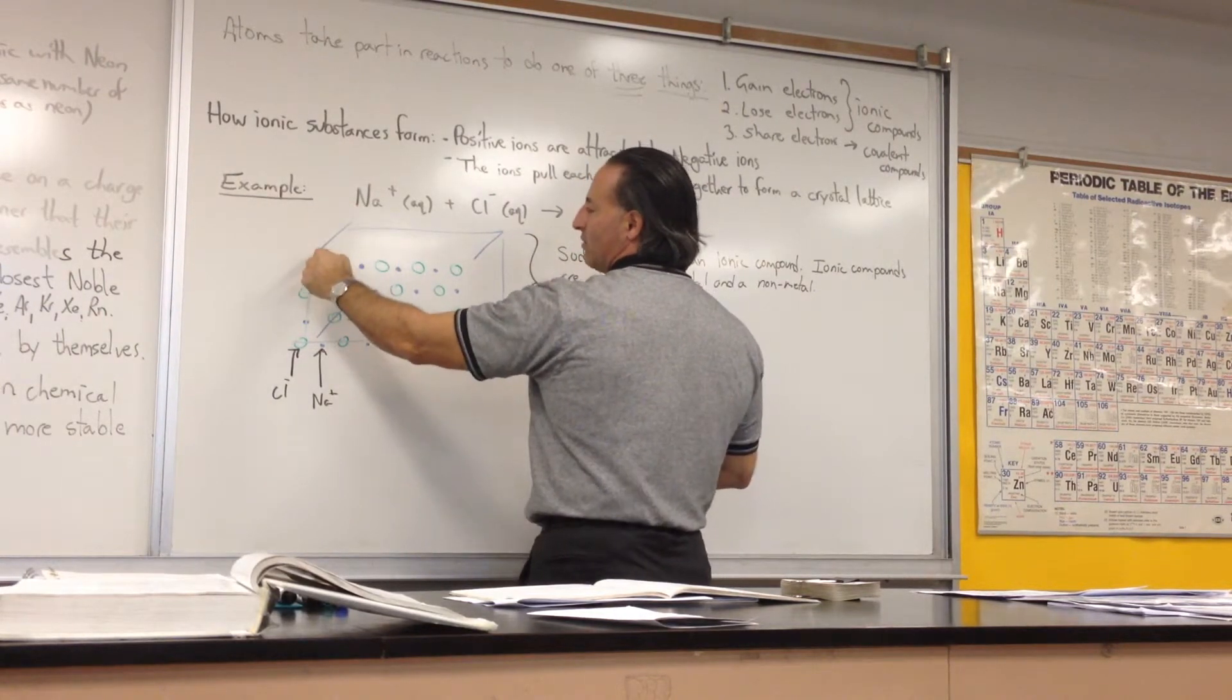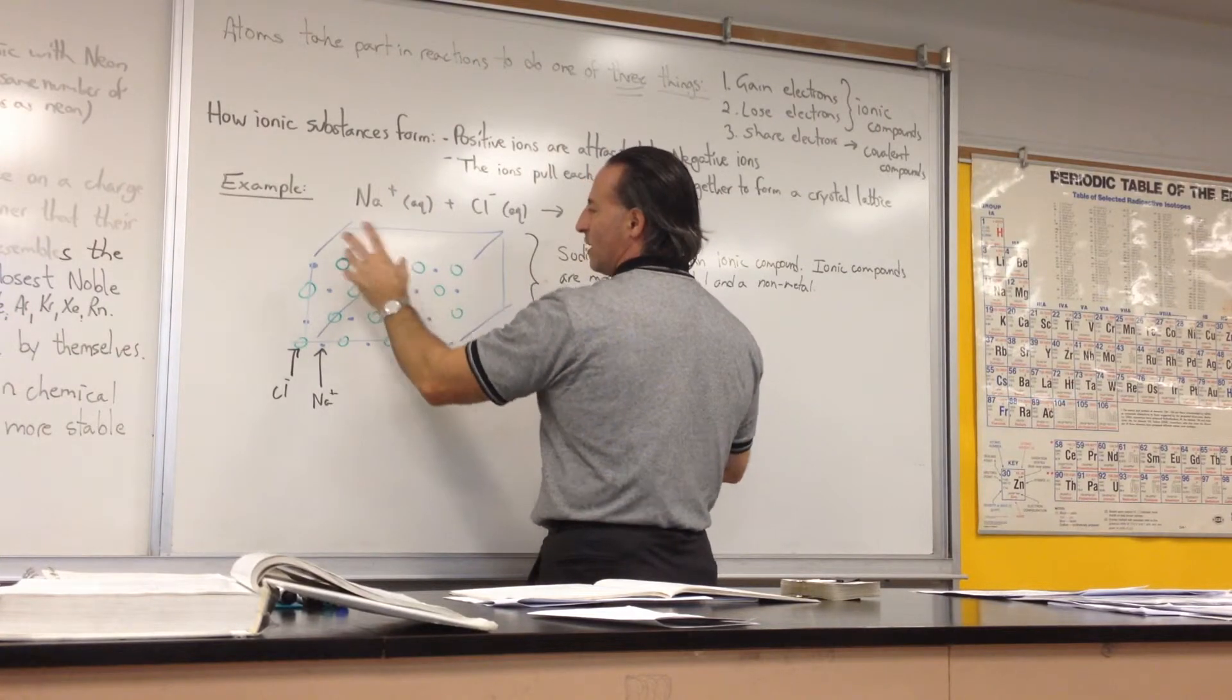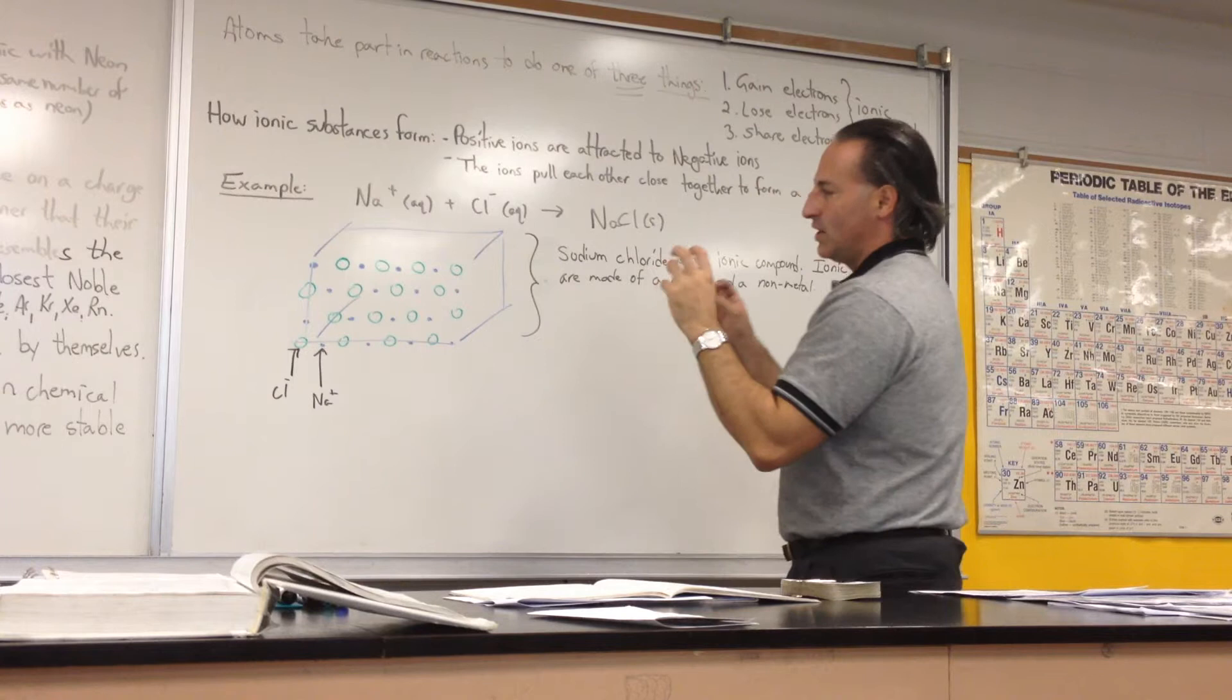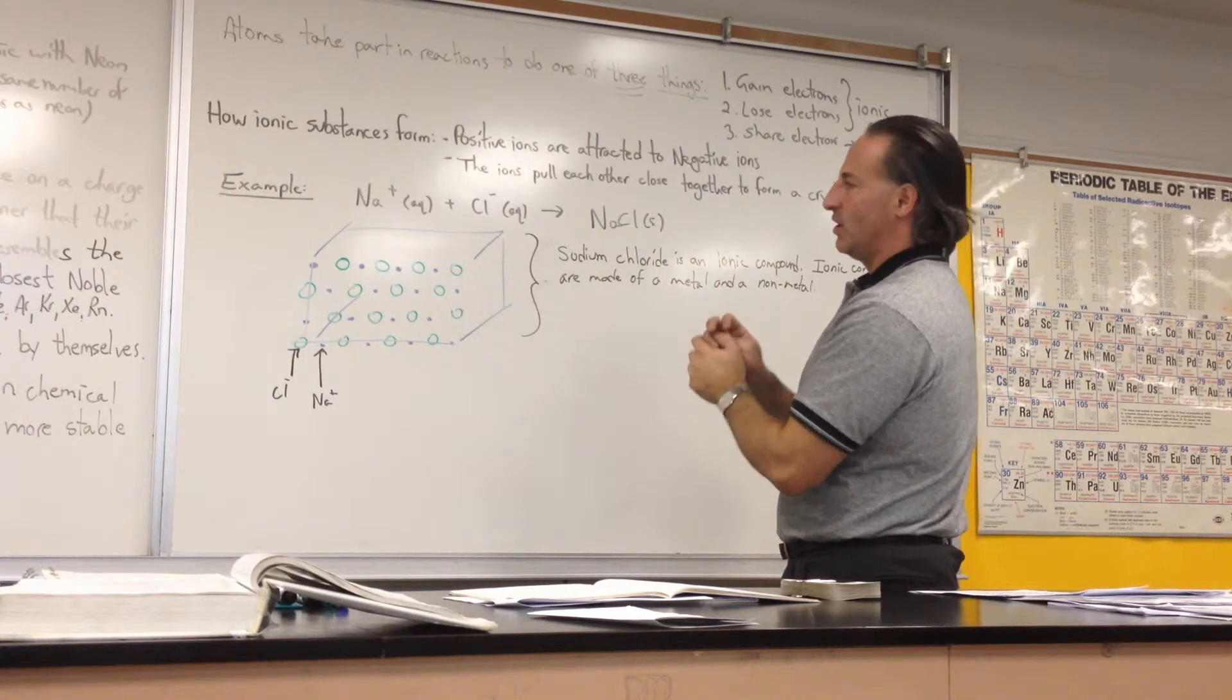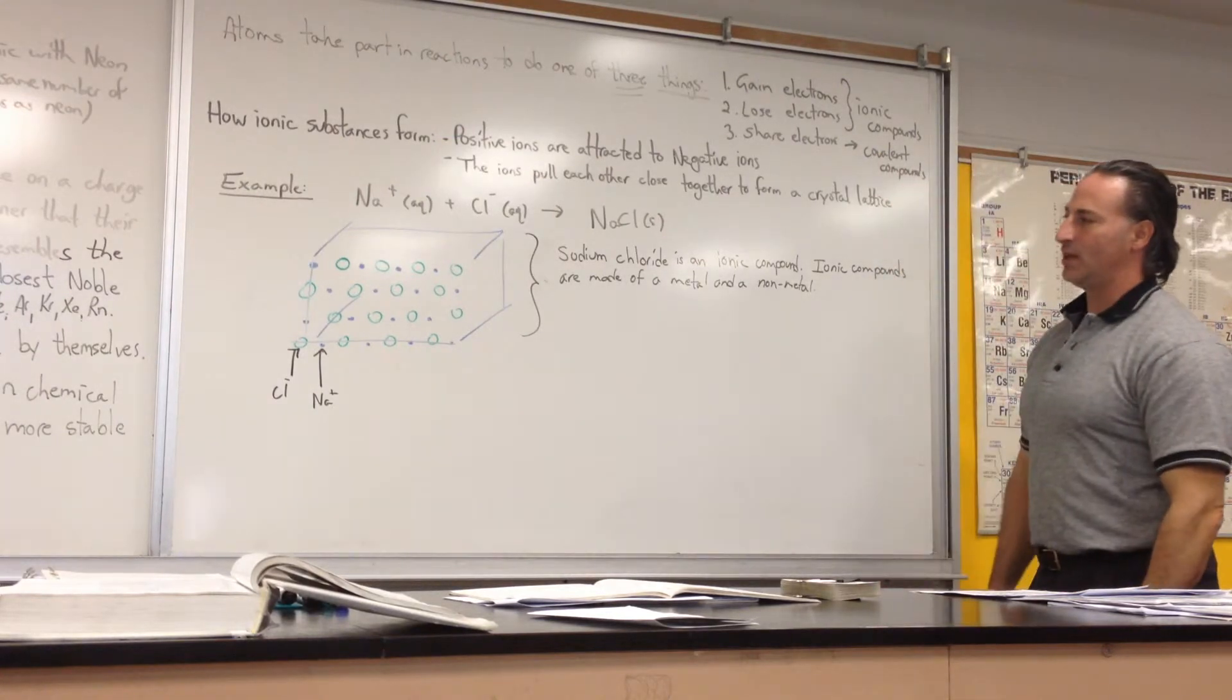The row behind that will have chloride, sodium, chloride, sodium. So what happens is you never get two negative charges close together, and you never get two positive charges close together. And that forms a very strong crystal with a high melting point because of the strong attraction between the atoms.